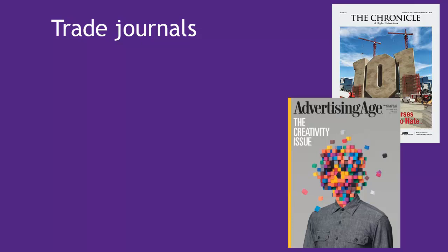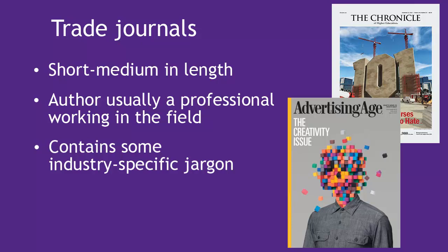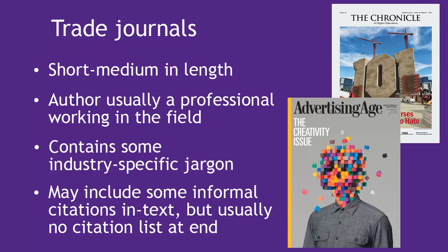Trade publications sometimes look like magazines, but they contain more specialized content. Articles in trade publications are short to medium in length, but they are written by professionals and for professionals in a specific field. There will be some industry-specific jargon in the articles. You may see informal citations throughout the text, but there usually won't be a formal list of citations at the end of the article. Examples of trade publications are The Chronicle of Higher Education and Advertising Age.